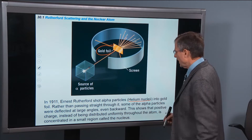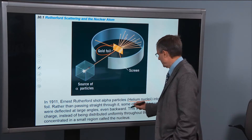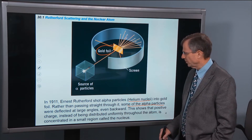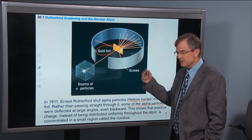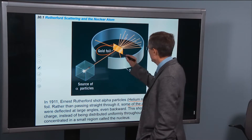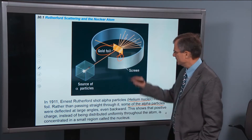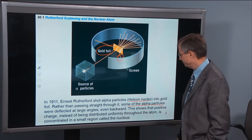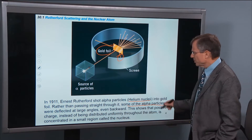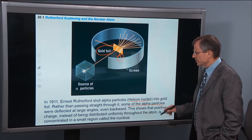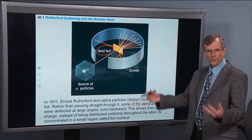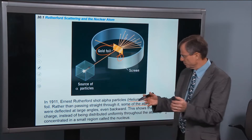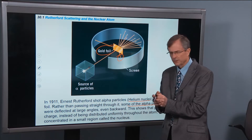But what actually happened is that some of the alpha particles were deflected at large angles, and some even came backward toward the screen. Instead of forward scattering, it's called backscattering. This shows that positive charge, instead of being distributed uniformly throughout the atom, is concentrated in a small region called the nucleus.